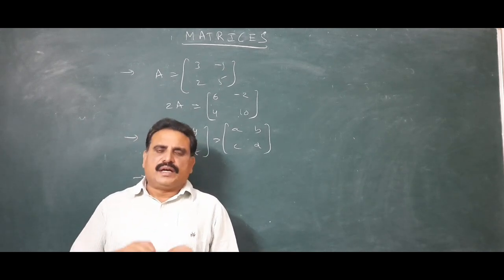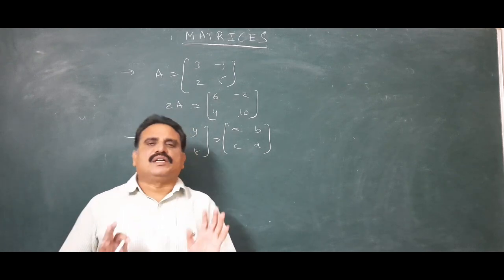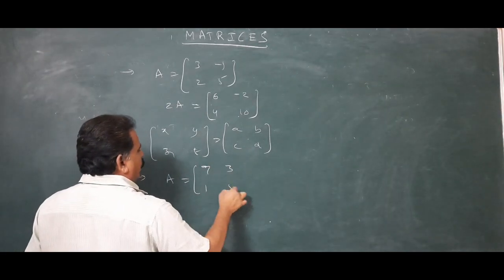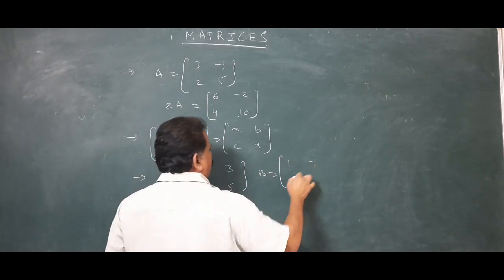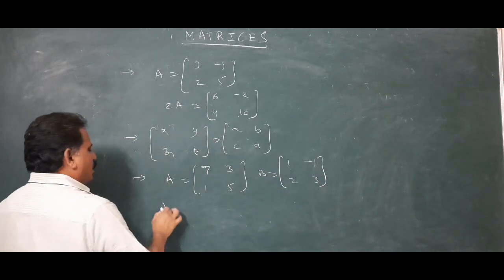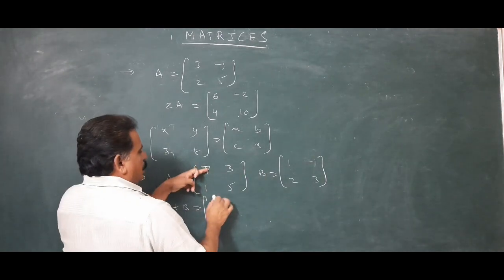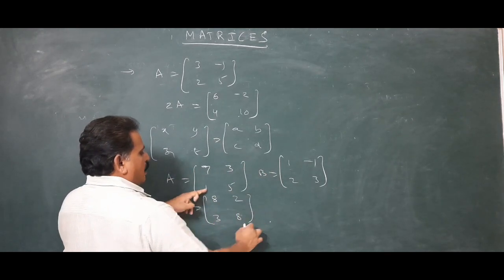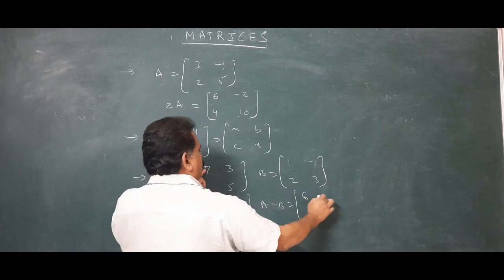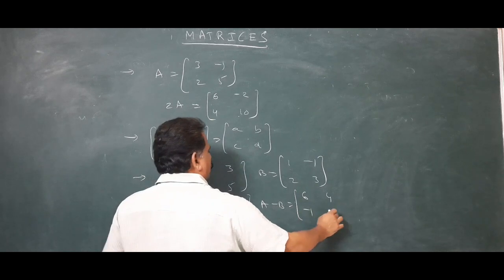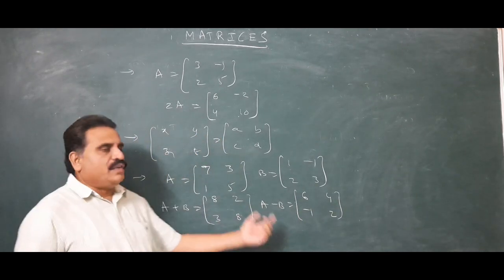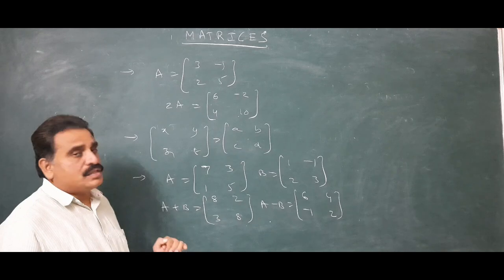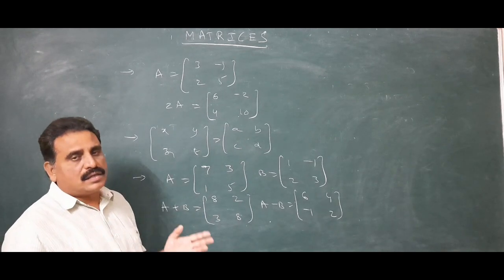Addition and subtraction of matrices is only possible when both matrices have the same order. For example, if A = [7, 3; 1, 5] and B = [1, -1; 2, 3], then A + B = [8, 2; 3, 8] and A - B = [6, 4; -1, 2]. This is addition and difference of corresponding elements.